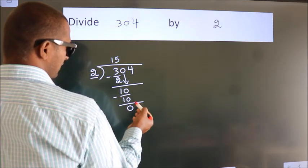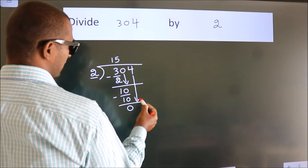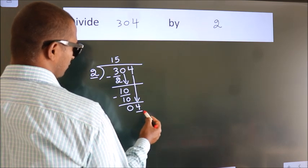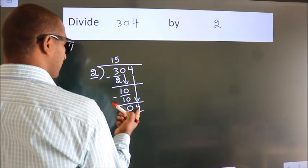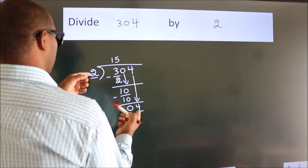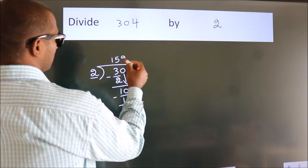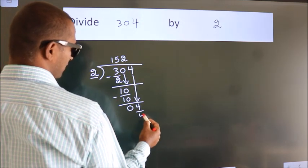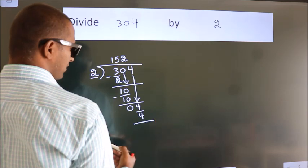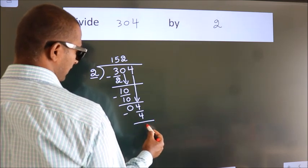After this, bring down the beside number. So 4 down. So 4. When do we get 4? In 2 table. 2 2s, 4. Now we subtract. We get 0.